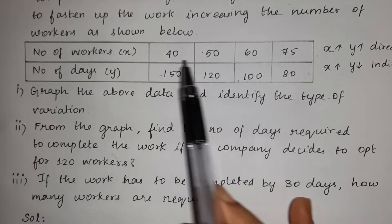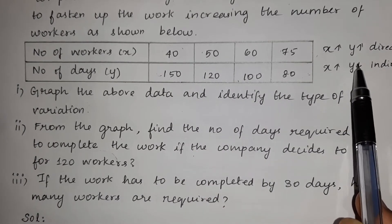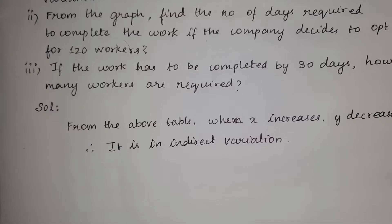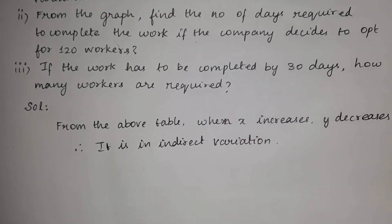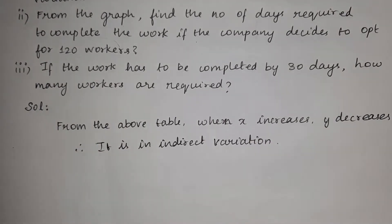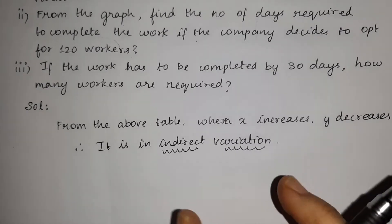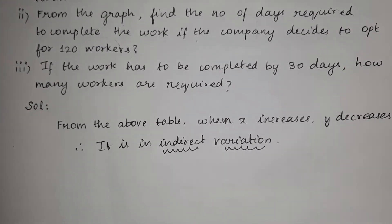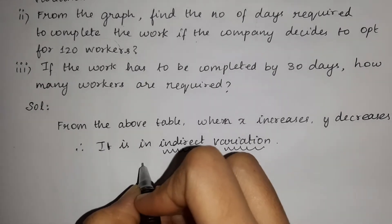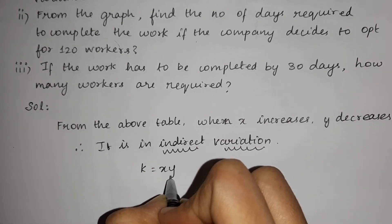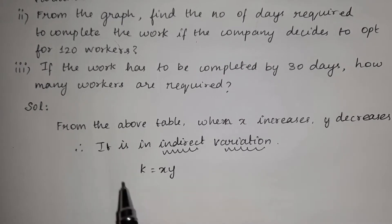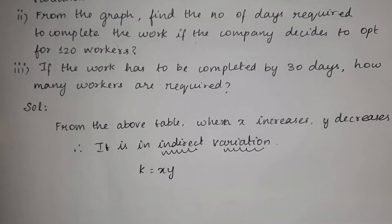When x increases, y decreases. Therefore it is an indirect variation. For indirect variation, the equation is k equals x into y, where k is the constant of variation.